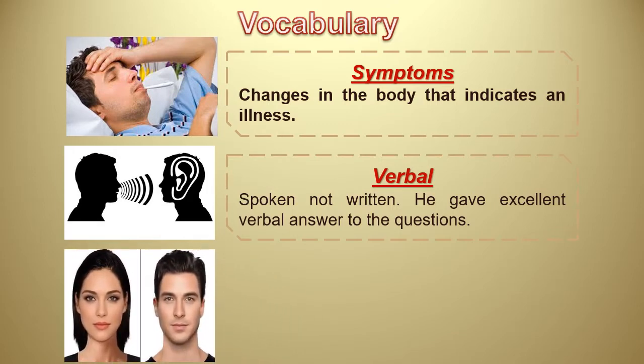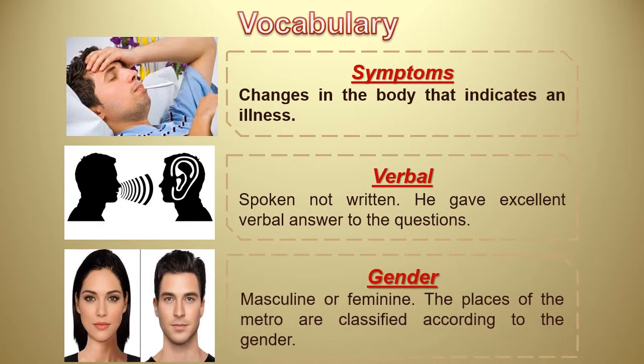The next word is verbal, which means oral or spoken, not written. Example: he gave an excellent verbal answer to the questions. Next is gender — masculine or feminine. Gender means masculine or feminine: men or women. For example, the places in the metro are classified according to gender — places for men and places for women.